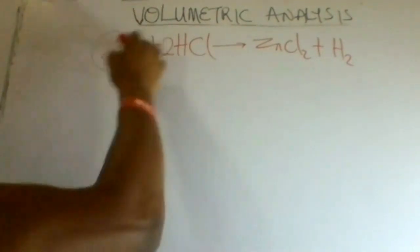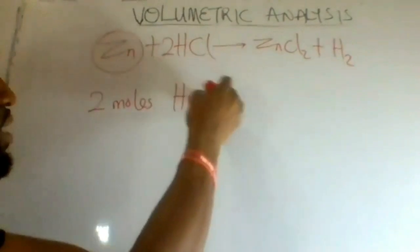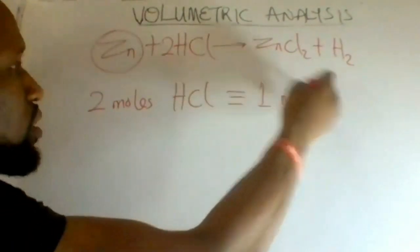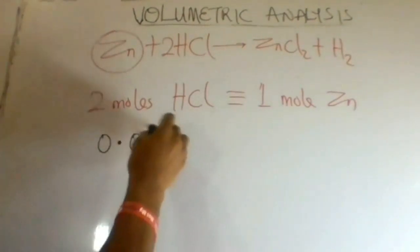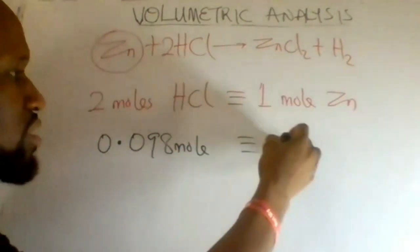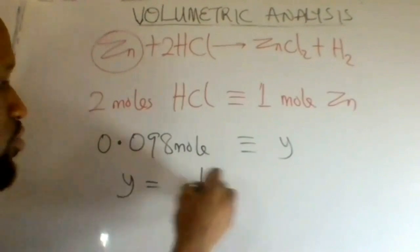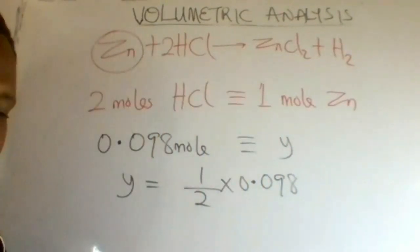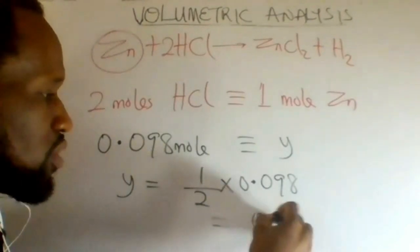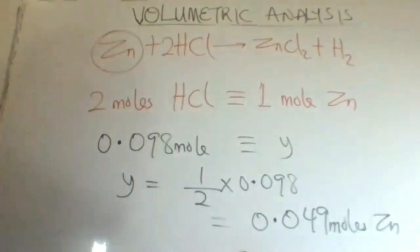We need to get the mass of zinc. Two moles of HCl react with one mole of zinc. Therefore, 0.098 moles of HCl will react with Y moles of zinc. Y equals 1 divided by 2, multiplied by 0.098, which gives 0.049 moles of zinc.